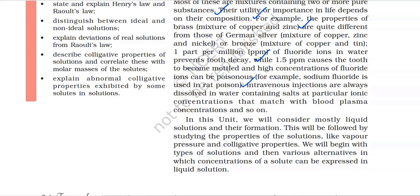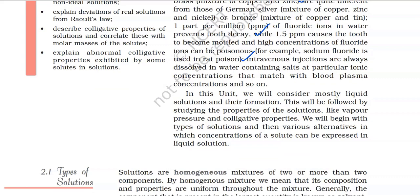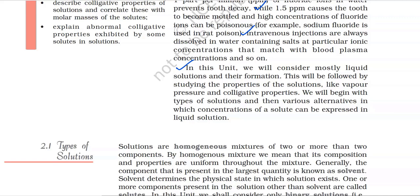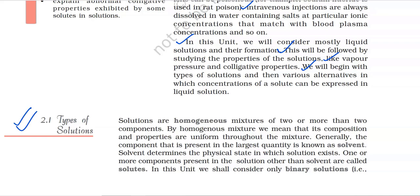For example, sodium fluoride is used in rat poison. Intravenous injections are always dissolved in water containing salts at particular ionic concentrations that match blood plasma concentrations. In this unit, we will consider mostly liquid solutions and their formation, followed by studying properties like vapour pressure and colligative properties. We will begin with types of solutions and various ways to express concentrations of solute in liquid solution. 2.1 Types of Solutions.